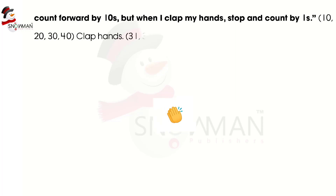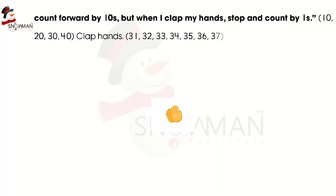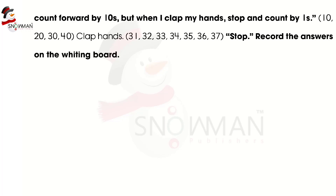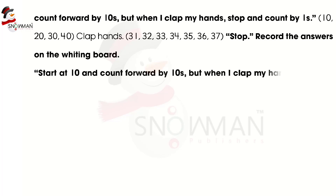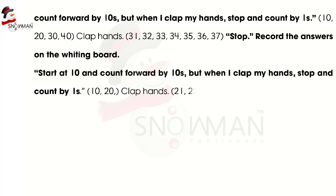Ask the children to write from 41 to 50. Record the answers on the writing board. Continue the counting activity: start at 10, count forward by tens, then when I clap my hands, count by ones — 10, 20 — clap — 21, 22, 23.